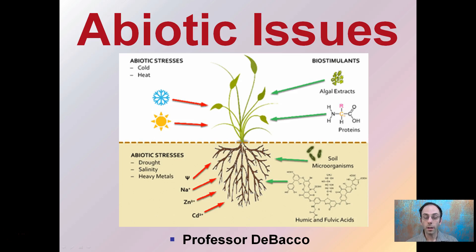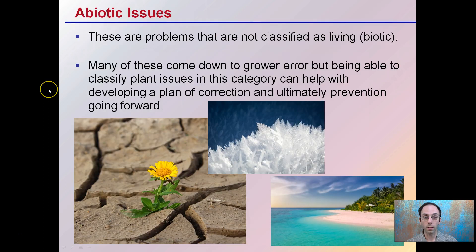We're going to look at some of the abiotic issues that impact plants. Some listed here include extremes in temperature, such as cold or heat. Other stresses can be drought, salinity, heavy metals, and a couple others to discuss. These are abiotic issues impacting plants — not to be confused with biotic or living issues. All abiotic means non-living. Many of these come down to grower error, but being able to classify plant issues in this category can help with developing a plan of correction and ultimately prevention going forward.